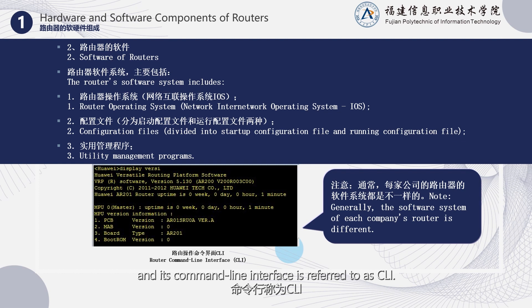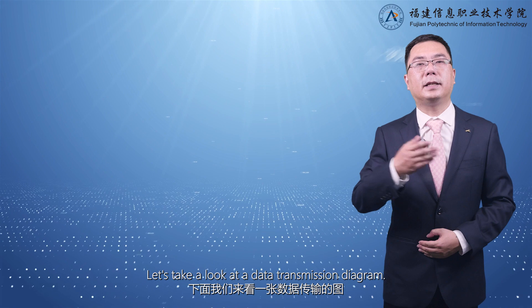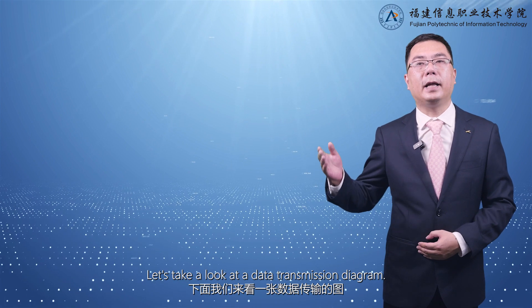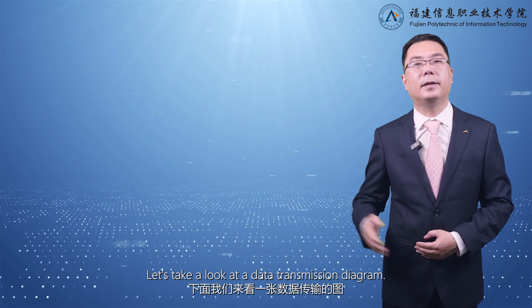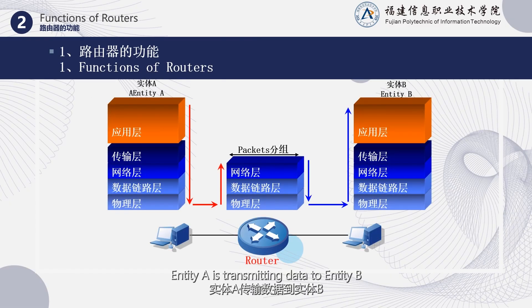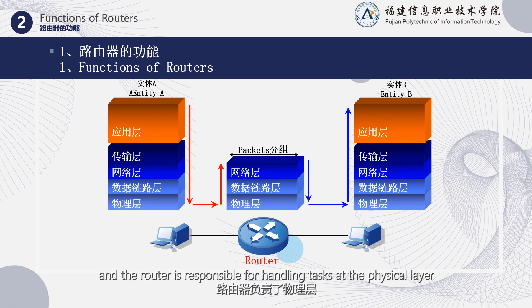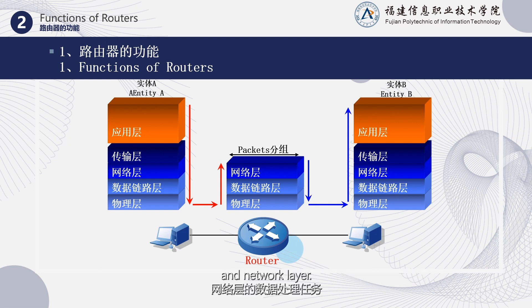Let's take a look at a data transmission diagram. Entity A is transmitting data to Entity B, and the router is responsible for handling tasks at the physical layer, data link layer, and network layer.